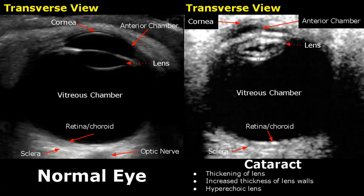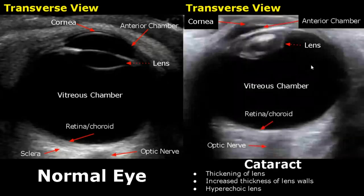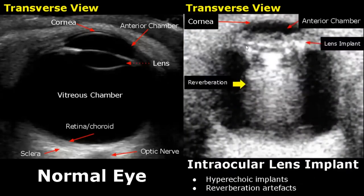In a cataract there is increased thickness of the lens walls and it will also be hyperechoic. Here is another case of cataract — we see a hyperechoic thick lens. This is an image of an intraocular lens implant — it is hyperechoic and will have reverberation artifacts.